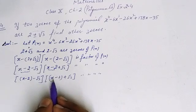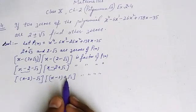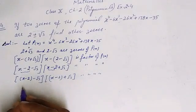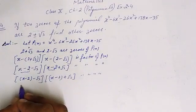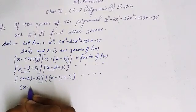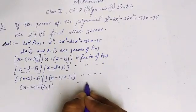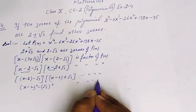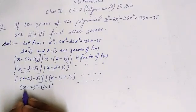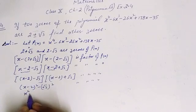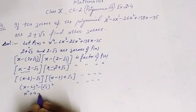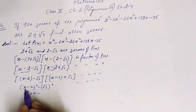Applying the formula (a - b)(a + b) = a² - b², we get (x - 2)² - (√3)². Expanding: (x - 2)² = x² - 4x + 4, and (√3)² = 3. So this becomes x² - 4x + 4 - 3 = x² - 4x + 1, which is a factor of p(x).